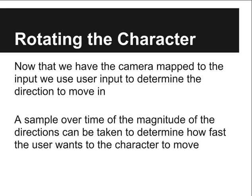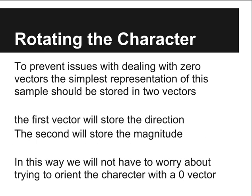The next step is to sample over the magnitude and direction of the user input so we can determine what speed the character should be moving. We store the speed of the character in two vectors: one for the magnitude and another for the direction, so that we never attempt to orient the character with a zero vector.